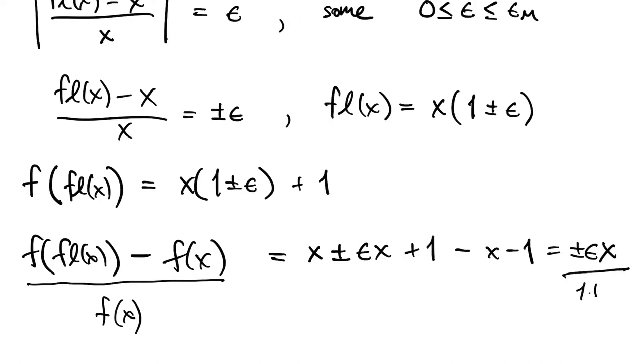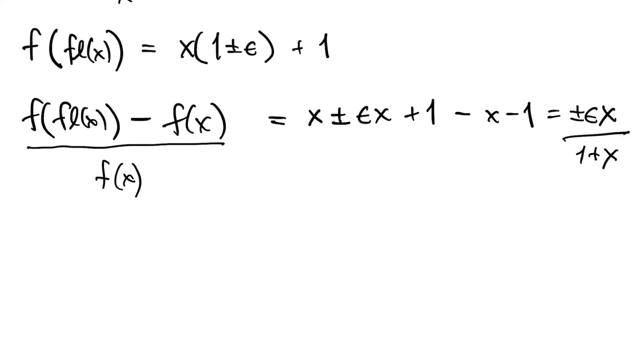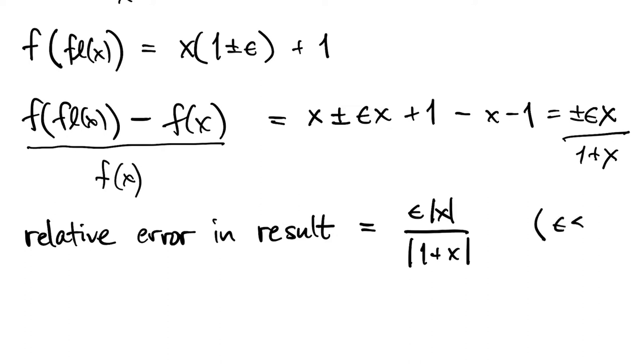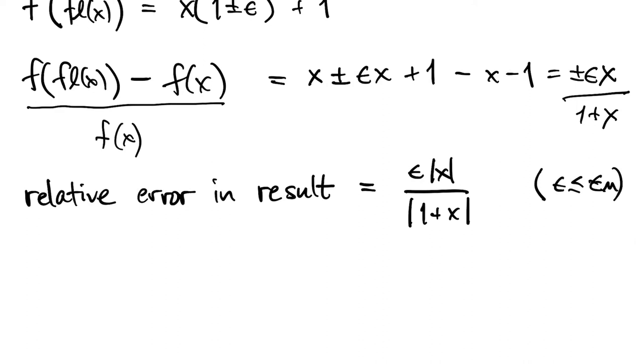So if we now make this relative to the true solution, f of x, then we can see that this relative change in the result due to perturbing the data is the absolute value of x over 1 plus x times that perturbation size epsilon.